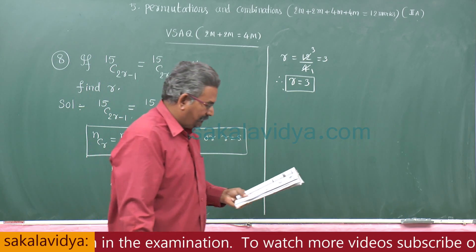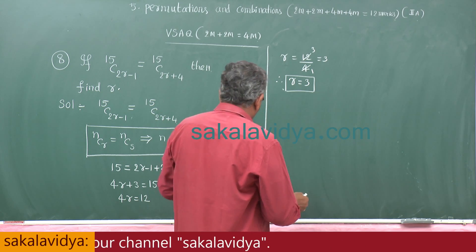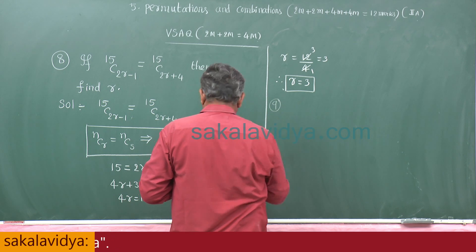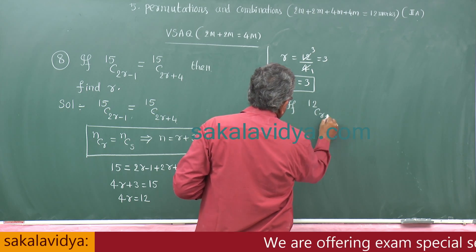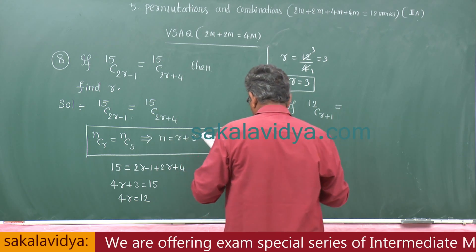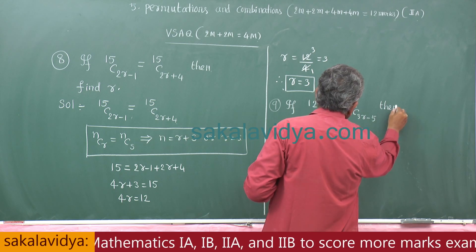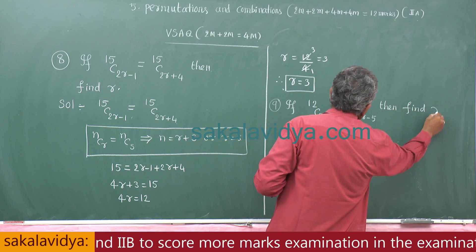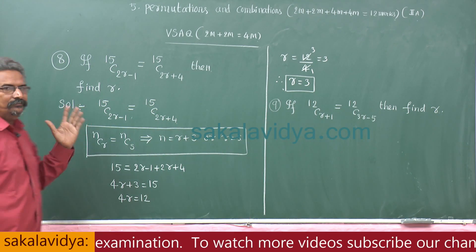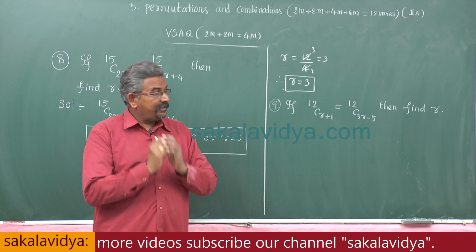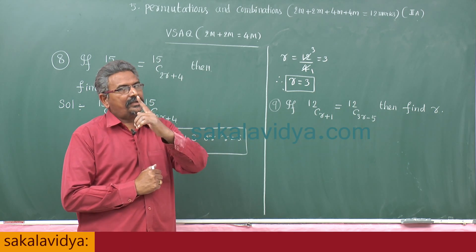Now, 9th problem: if 12C(r+1) is equal to 12C(3r-5), then find r. This is also a similar type of problem and is very important from the MSET entrance examination.